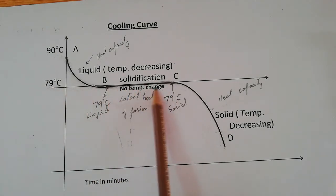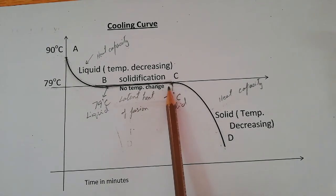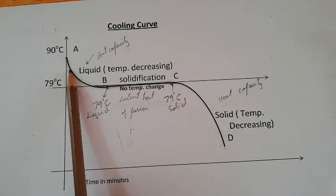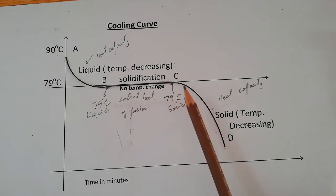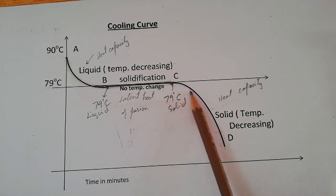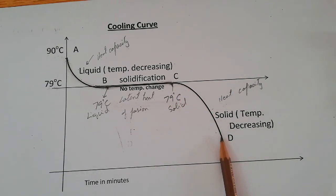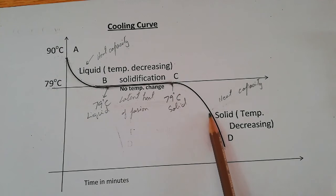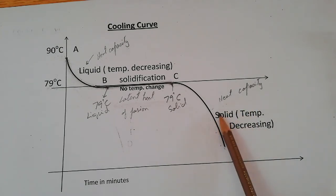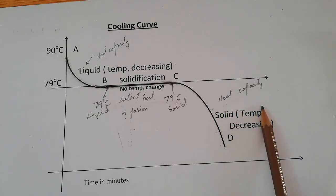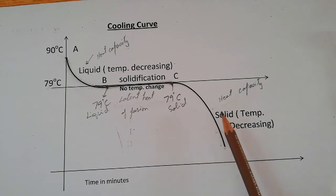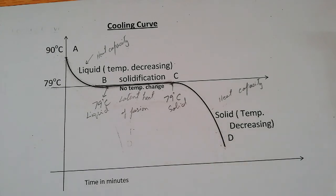This fact must be kept in mind: whenever the state is changing, the temperature is not changing; when the temperature is changing, the state will not change. From C to D, the temperature is decreasing from 79 degrees Celsius, and naphthalene remains in solid form while the temperature decreases. The heat taken out during this portion of the graph can be calculated with the heat capacity of solid naphthalene.